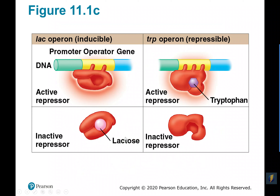Here is another look at that. When the repressor is activated, and here is the lactose that inactivates the repressor. There's also another operon where an active repressor forms when the molecule tryptophan binds onto it, and an inactive repressor exists without tryptophan. So we can turn genes on and off by the production of regulatory proteins and whether those regulatory proteins themselves are active or inactive.